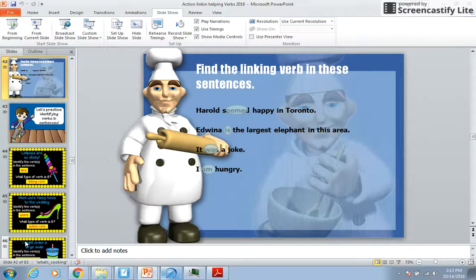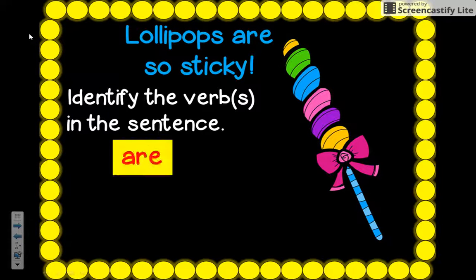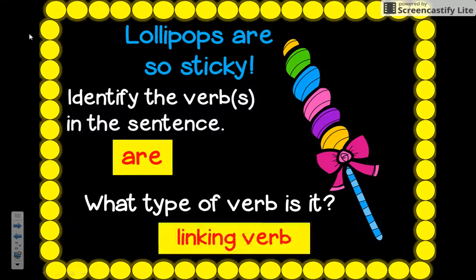The last thing I'd like to do — and this takes us into your worksheet — is identify whether the verb in a sentence is a linking, action, or helping verb. 'Lollipops are sticky.' 'Are' is our verb. Can you see it? Is it an action? No. Is there any action verb in the sentence? No — so it can't be a helping verb, because helping verbs always come with an action verb. Can I put an equal sign instead of 'are'? Yes — 'lollipops equals sticky.' So 'are' is a linking verb.